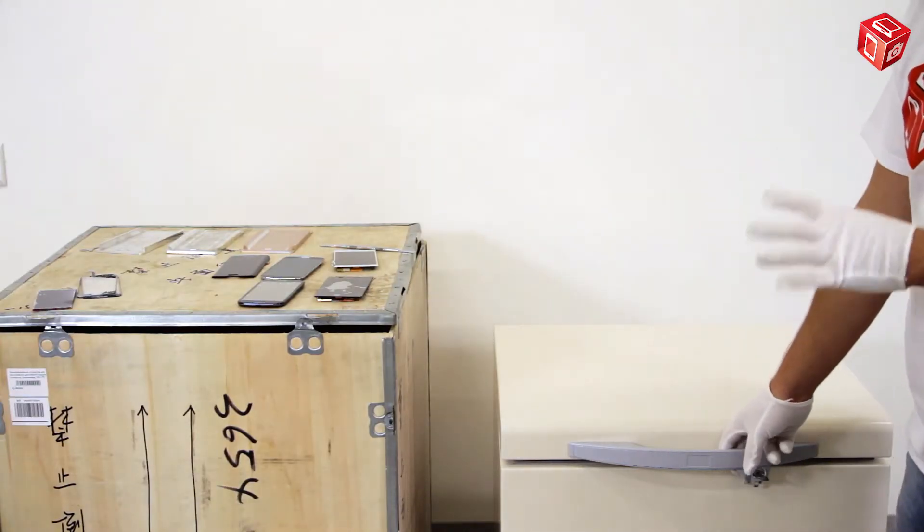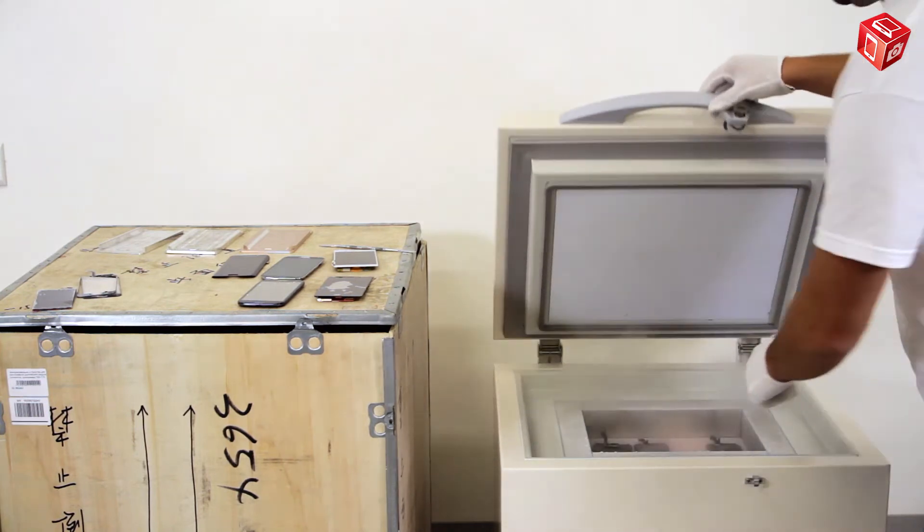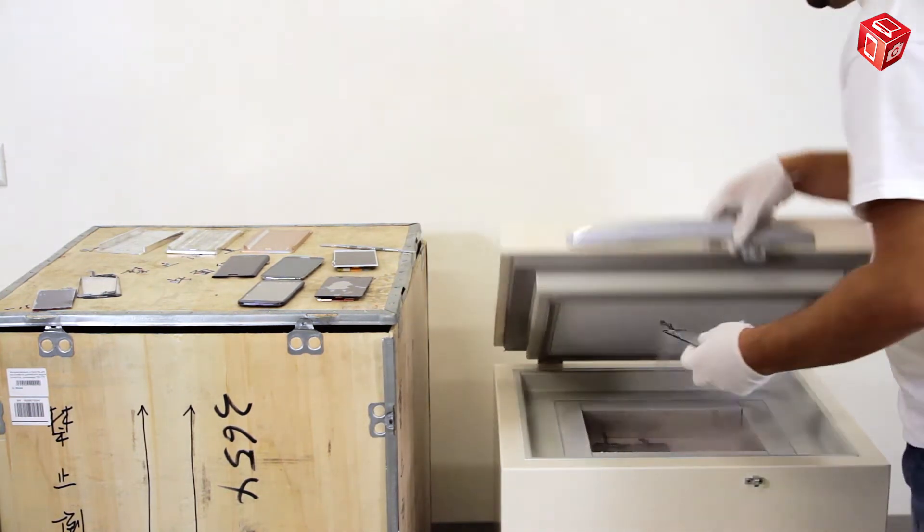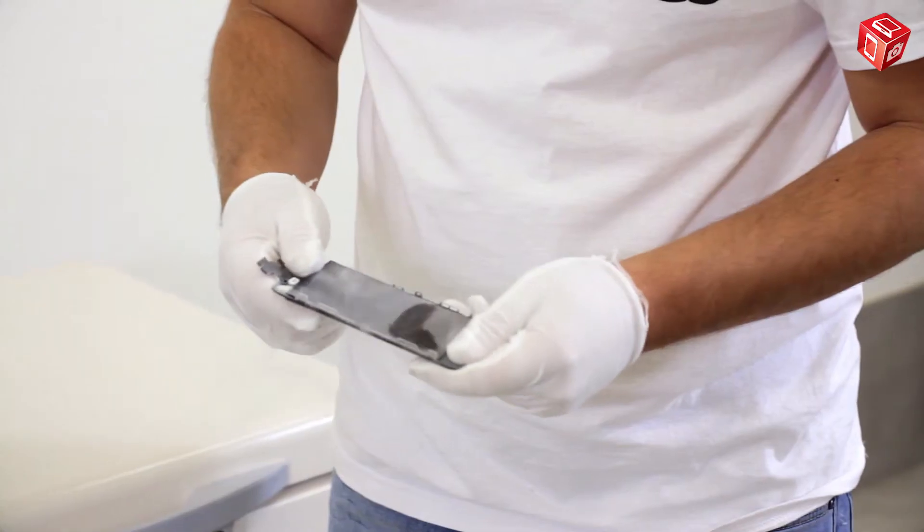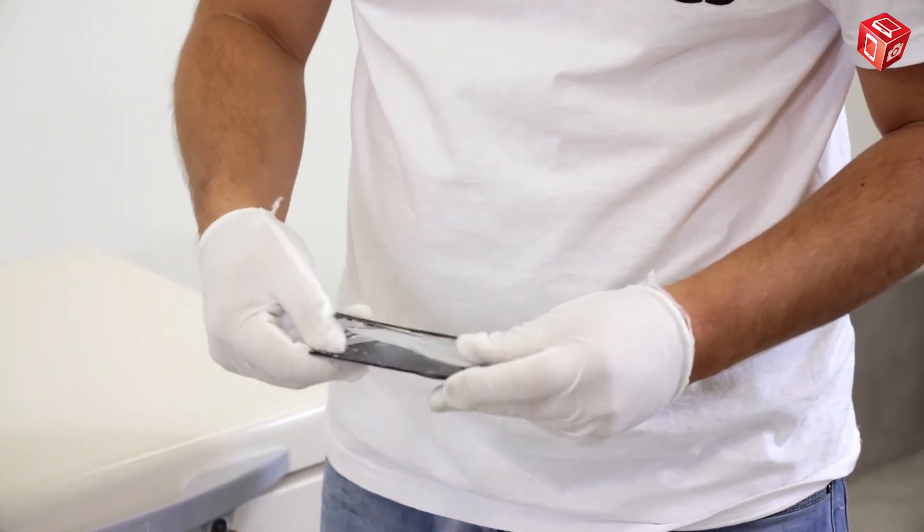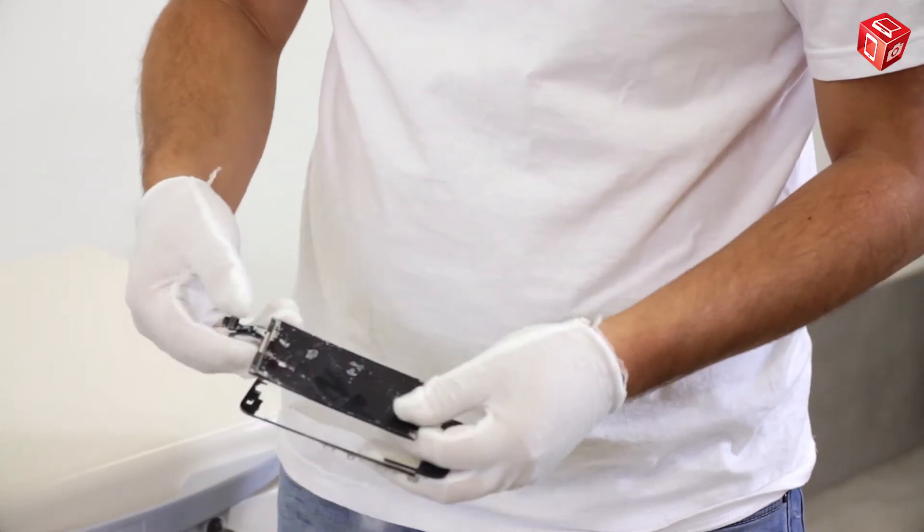After ungluing, you will need to wait until condensation disappears from the display. The next display is an original. As you can see, only the glass came unglued. This is how it should work.